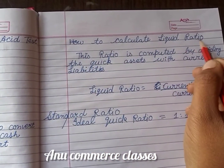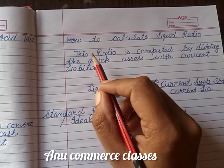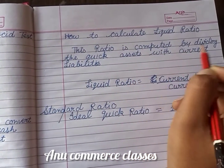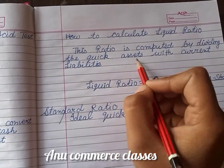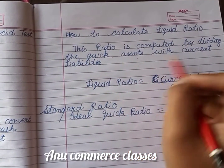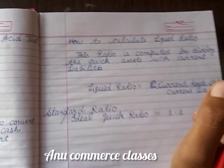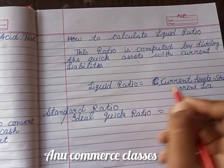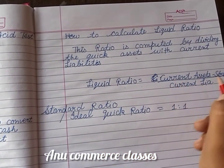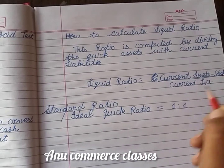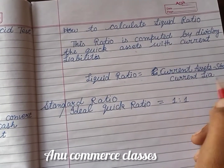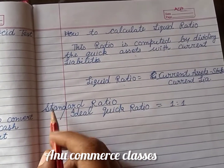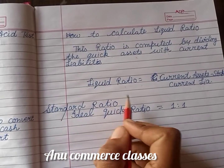To calculate the liquid ratio, this ratio is computed by dividing the quick assets by the current liabilities. The formula is: Liquid Ratio = (Current Assets minus Stock) divided by Current Liabilities.